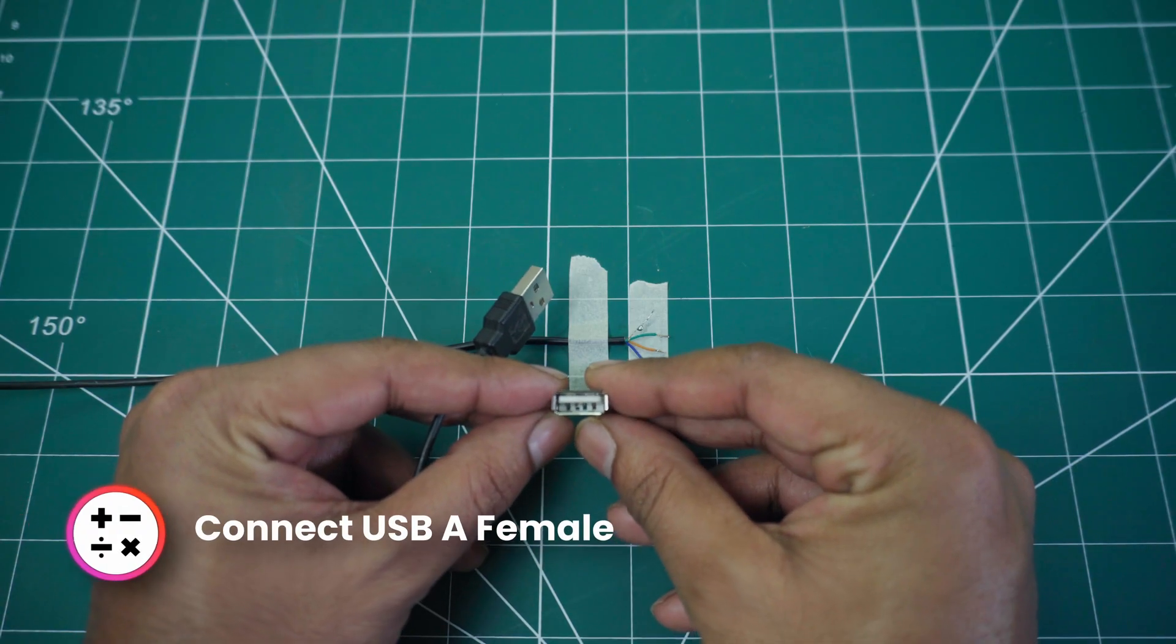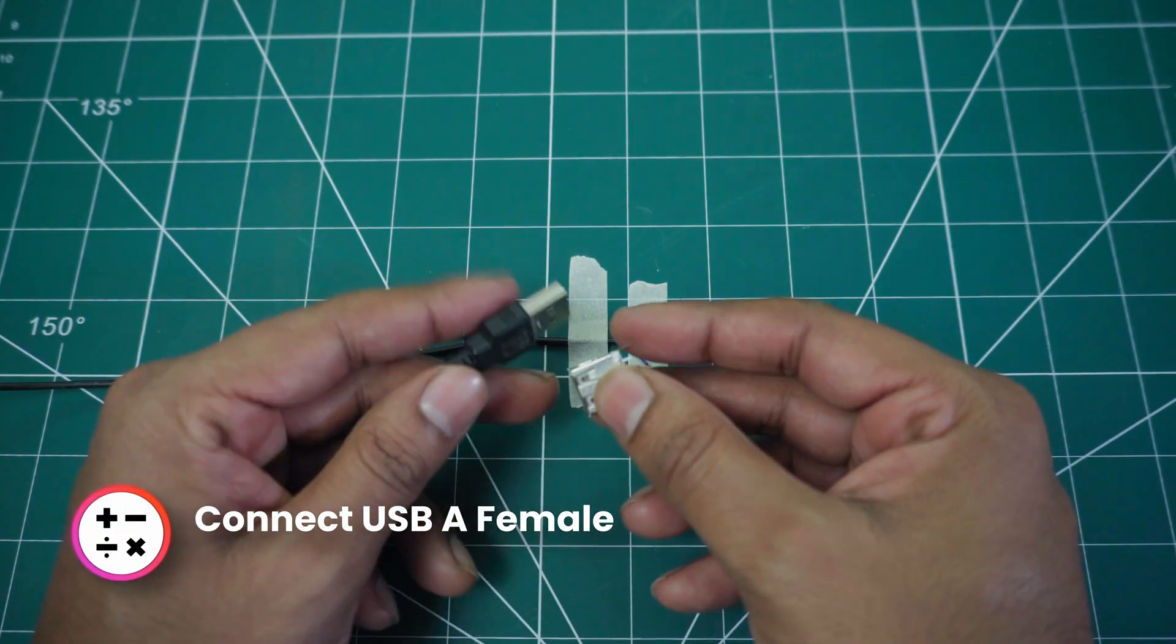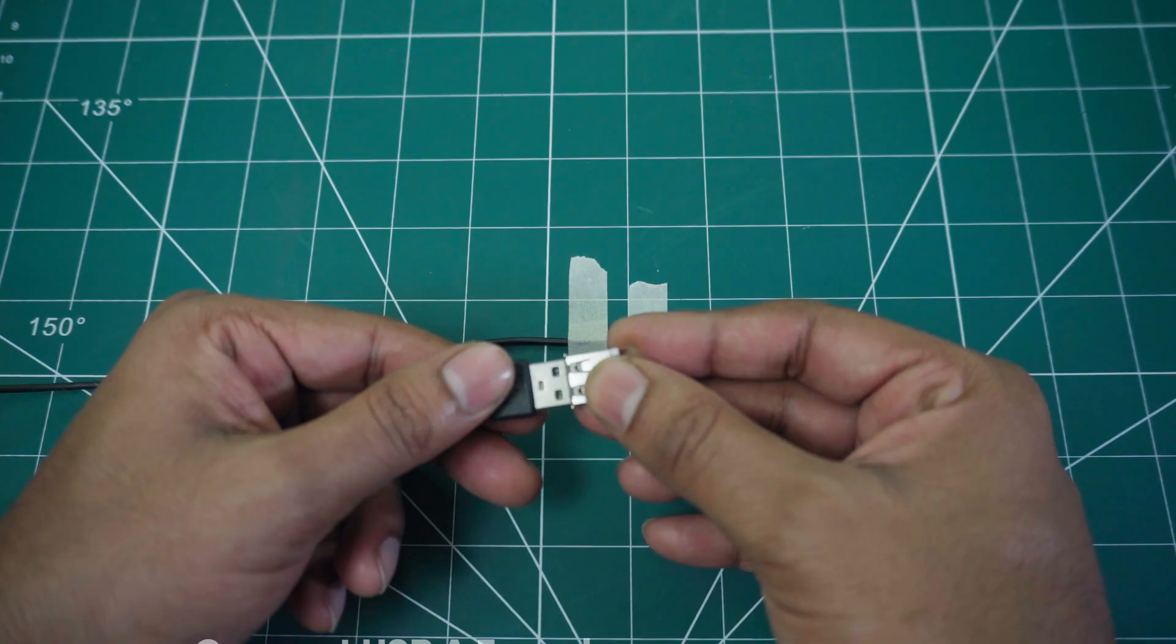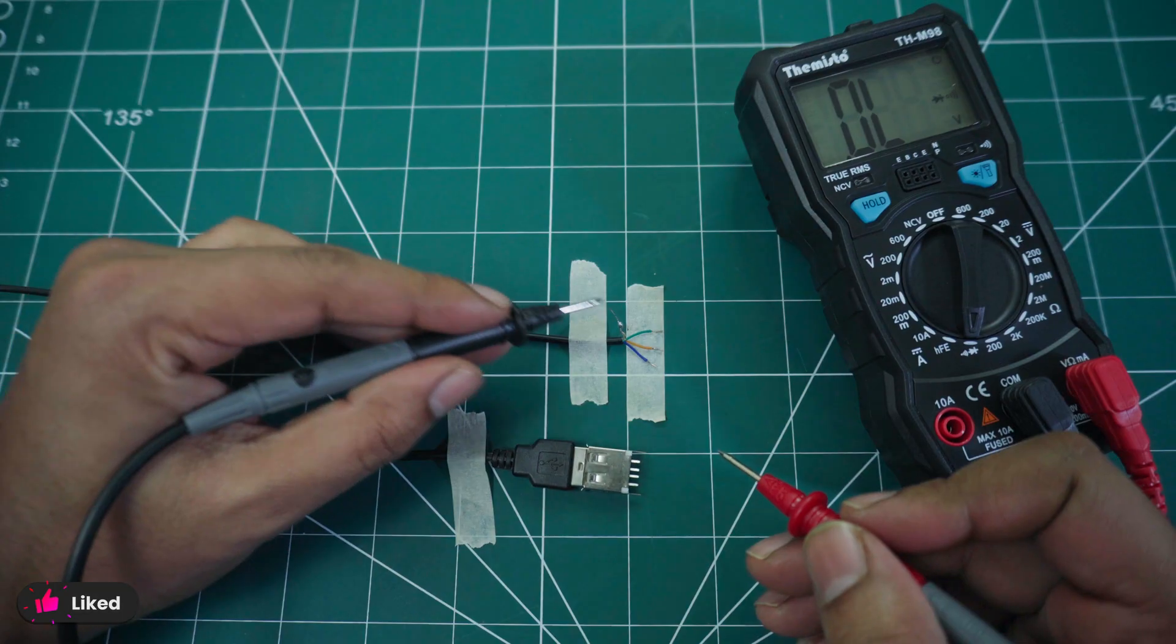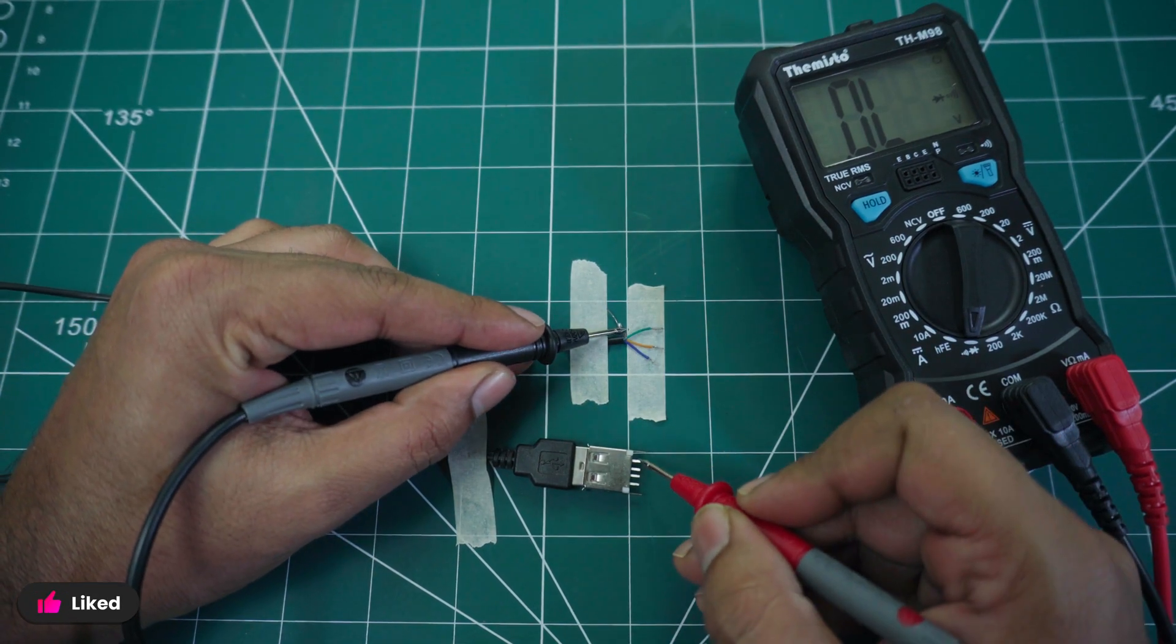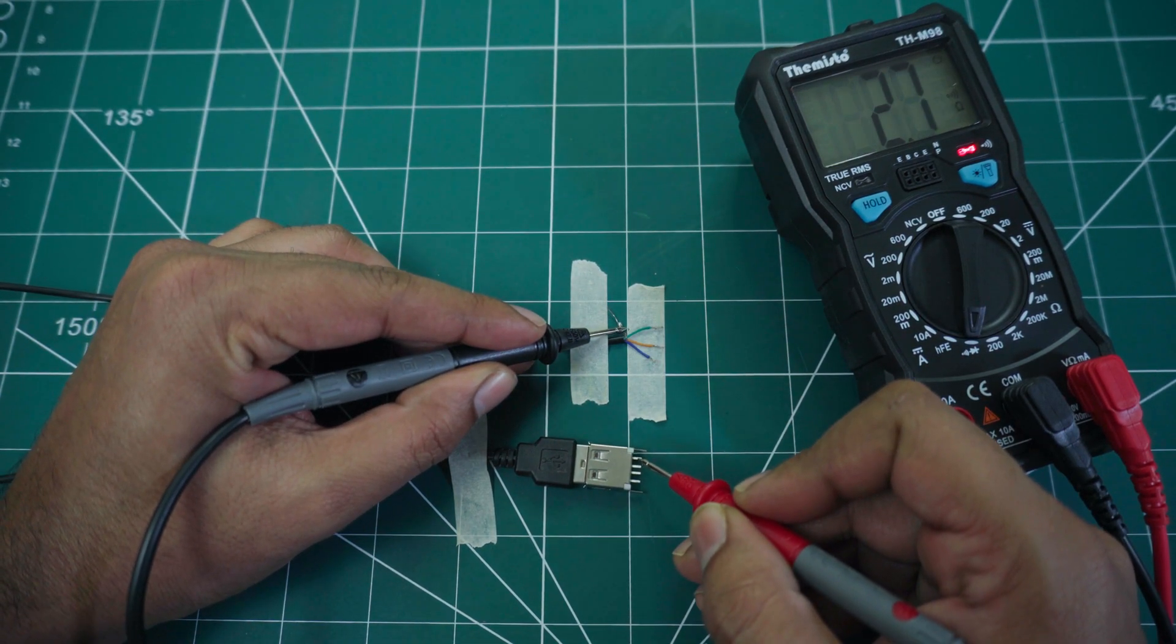Next, connect a USB-A female connector so that we can easily identify the data wires. As we know the VCC of this wire is the bare wire, now using that do a connectivity test to find the VCC pin of the connector.